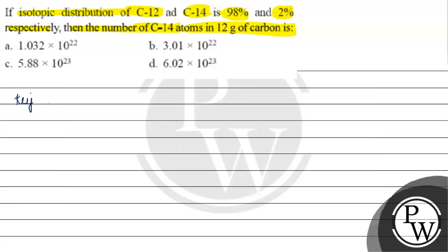The key concept for this question is number of moles equals mass by atomic mass, equals number of atoms by Avogadro's number.